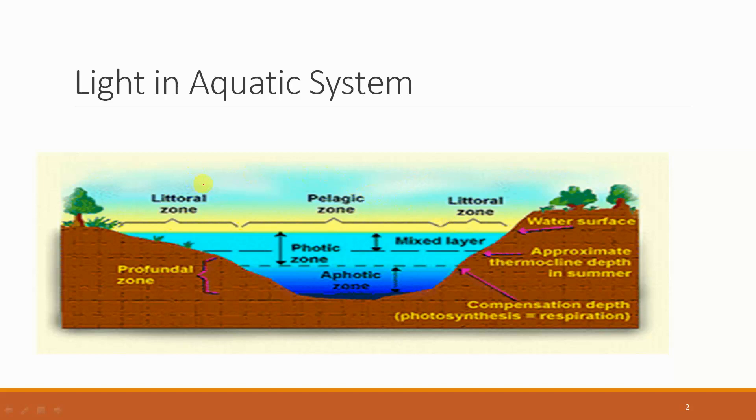One of these is the littoral zone. This is the zone of rooted vegetation. As you can see, it is near to the surface where light is penetrating. So this is where we have rooted vegetation present.